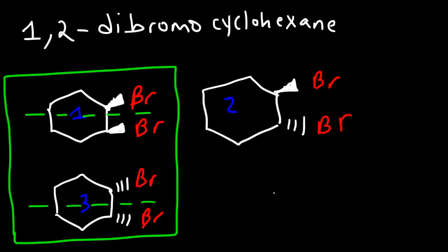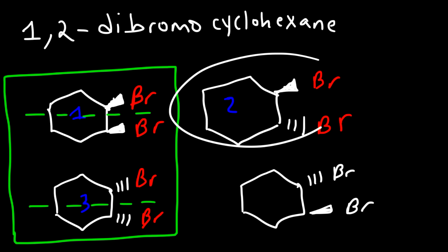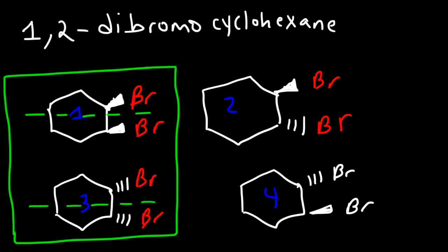There is one more stereoisomer we can draw — compound 4. Compounds 2 and 4 are enantiomers because all of the chiral centers have changed and there is no internal plane of symmetry. Compounds 1 and 3 are meso compounds, compounds 1 and 2 are diastereomers, and compounds 3 and 4 are also diastereomers. So we have a total of 3 distinct stereoisomers for 1,2-dibromocyclohexane.